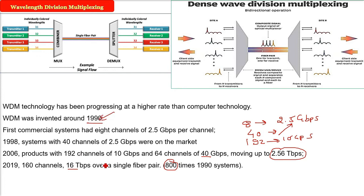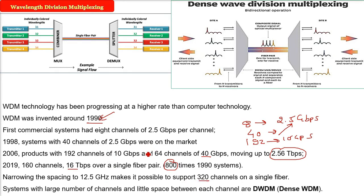So, what we are trying to suggest here is, narrowing the spacing to 12.5 GHz makes it possible to support even 320 channels on a single fiber. The system with this large number of channels, a little spacing between each channel are DWDM or dense WDM or dense wave division multiplexing. I hope you got the idea of dense WDM.